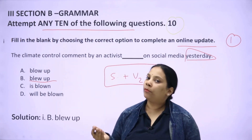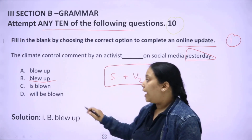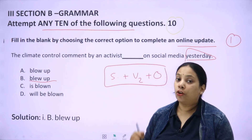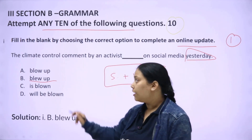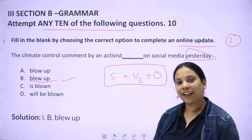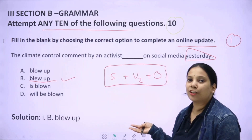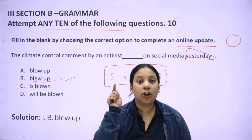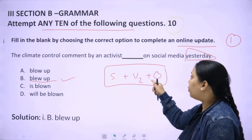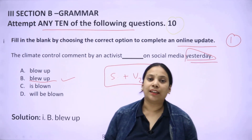Since 'yesterday' is mentioned here, 'will be blown' cannot be the answer as it indicates future tense. Option B — 'blew up' — will be the correct answer. See how easy this question is? It was solved because you know the structure of simple past tense, and whenever 'yesterday' appears, it always indicates simple past tense.